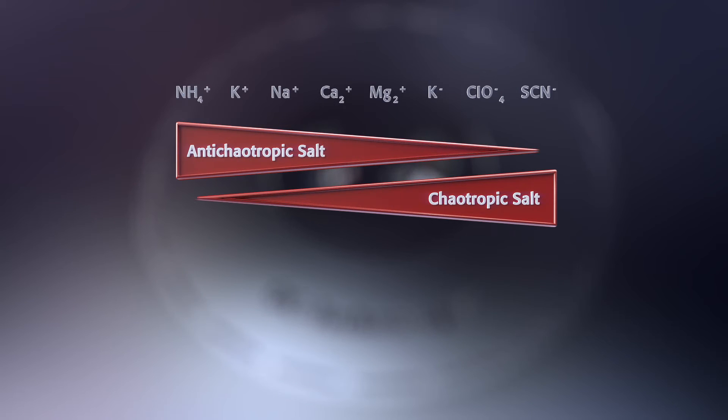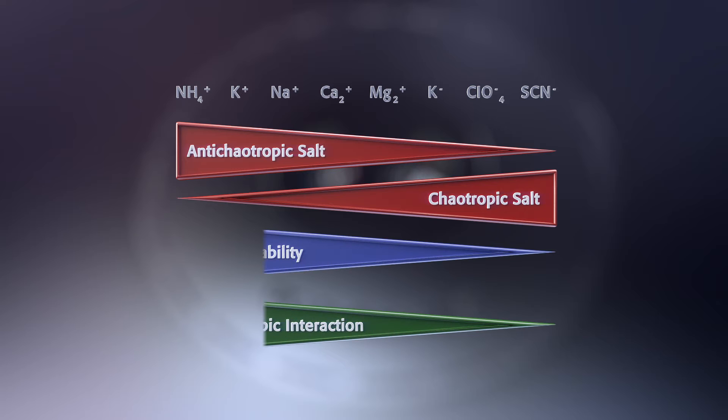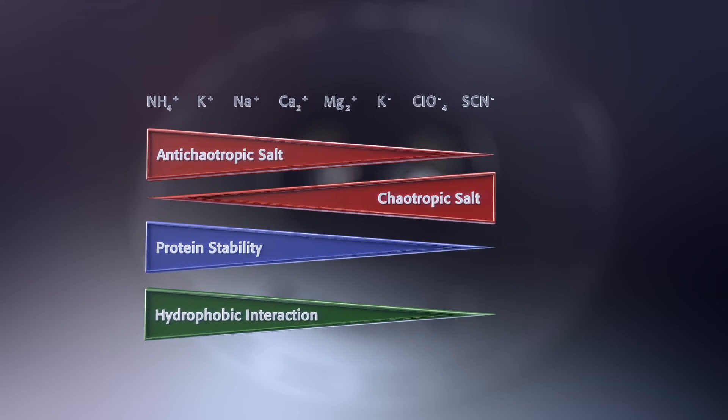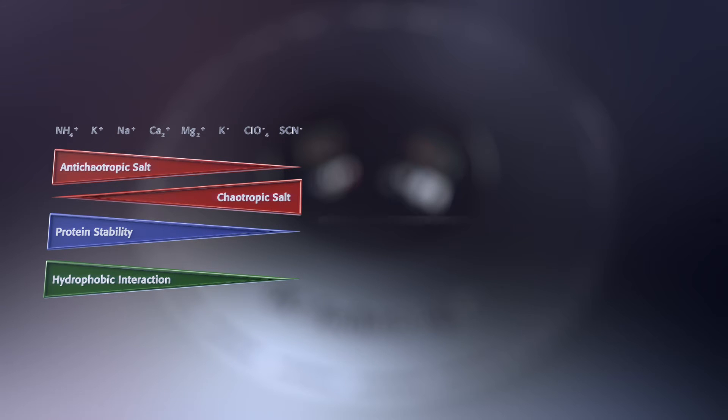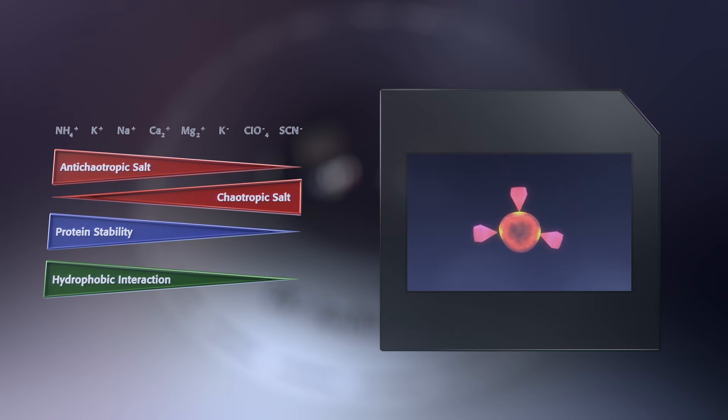But combining chaotropic and non-chaotropic salts results in optimized buffers and ideal preparation conditions. Plus, the use of different salts with lower ionic strengths favors protein stability and activity.